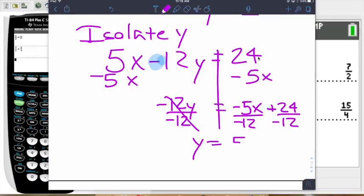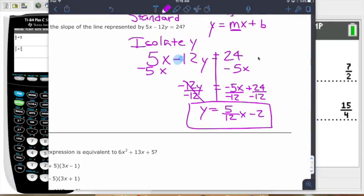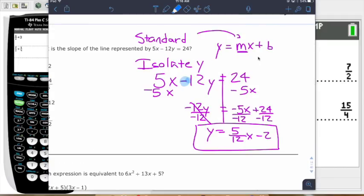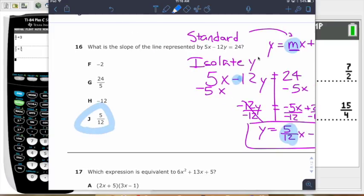Those cancel out. And then you have y equals, and then you have 5 over 12. You can't really do anything with that as far as simplification. And then minus 2 in this case. So here is your y equals mx plus b form. Going back to the question, they're asking for the slope. We use m to represent the slope. So it has to be this 5 over 12 right there.